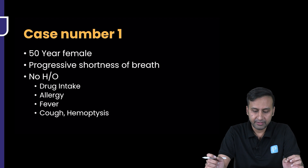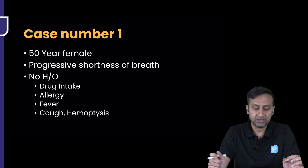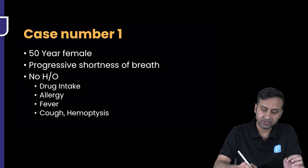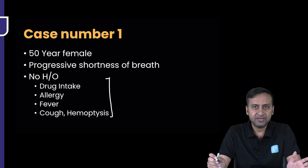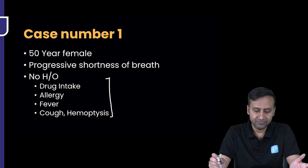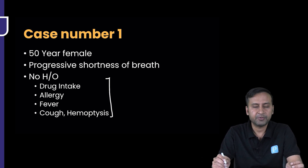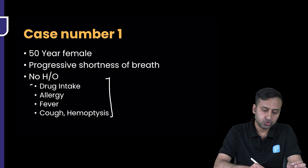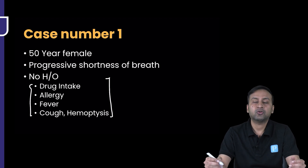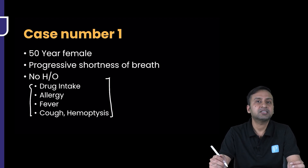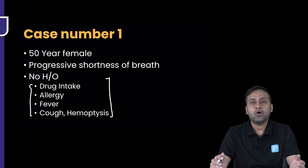A 50-year-old female came with shortness of breath. Her drug history was negative — she did not have any history of drug intake, allergy, fever, cough, or hemoptysis. The reason I'm giving so much stress to this historical and clinical part is because all the types of interstitial pneumonias we're going to discuss in this session are going to have a lot of overlapping features.